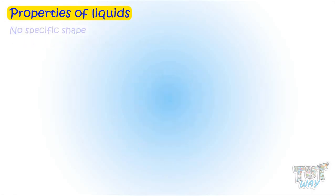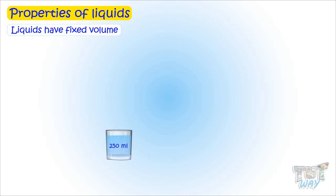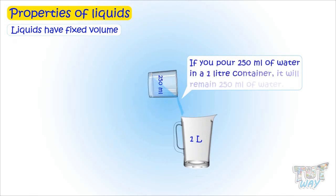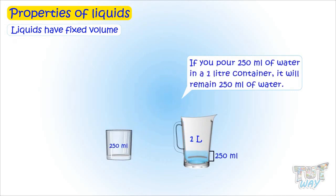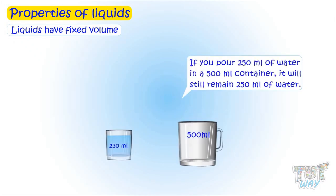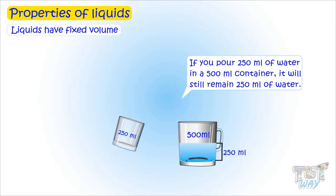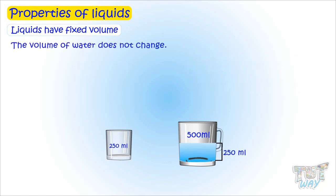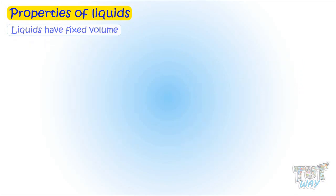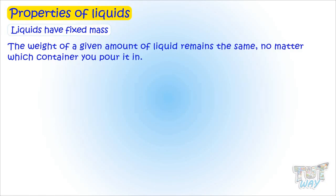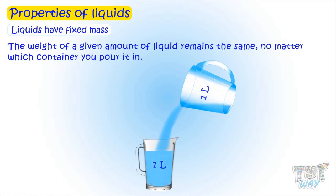Liquids have fixed volume. Just like solids, liquids keep the same volume — if you have 250 ml of water and pour it in a one-liter container, it will remain 250 ml. If you pour it in a 500 ml container, it will still remain 250 ml. Liquids also have fixed mass: the weight of a given amount of liquid remains the same no matter which container you pour it in. One liter of liquid will remain one liter no matter the container.